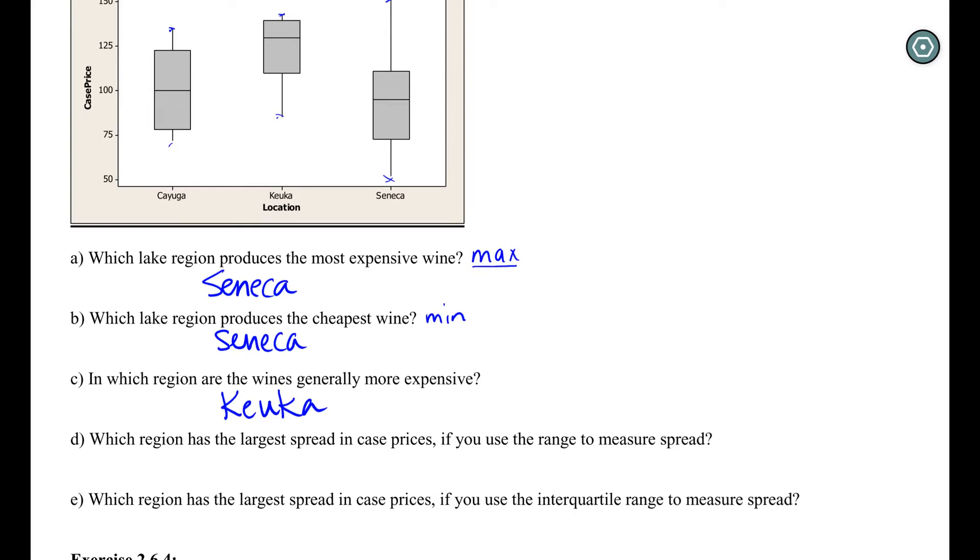So we sort of got the idea of center. Max and min are extreme values. The last piece is about variability, our spread. So D says which region has the largest spread if we use range. Remember range is max to min. So Seneca definitely wins this battle. It had the highest max and the lowest min, so 100% has the craziest range. Now if we use IQR as an E, IQR refers to the actual distance of the box. So which box is the shortest? And our shortest of these actual box portions of these boxplots, that middle 50%, that's the smallest, is also Kiyuka.